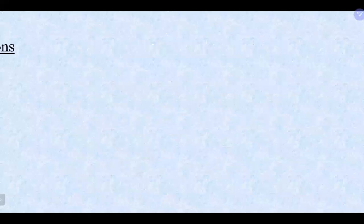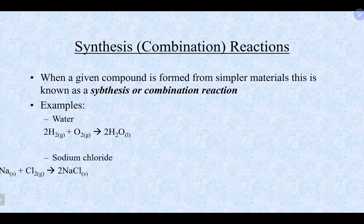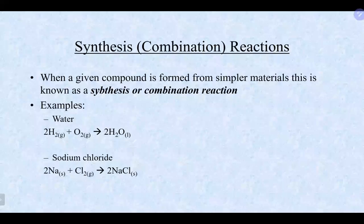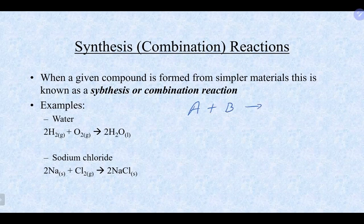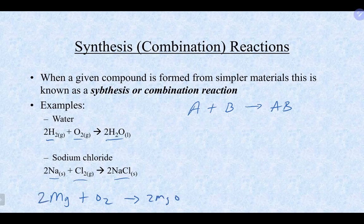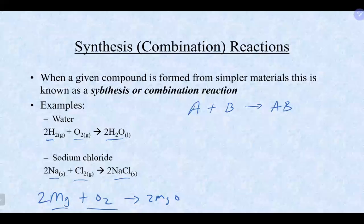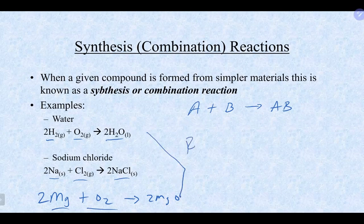A synthesis or combination reaction is when two things come together to make one thing. Examples: H₂ + O₂ → H₂O; Na + Cl₂ → NaCl; Mg + O₂ → MgO. All of these are also redox reactions, and the one with oxygen could also be classified as combustion.